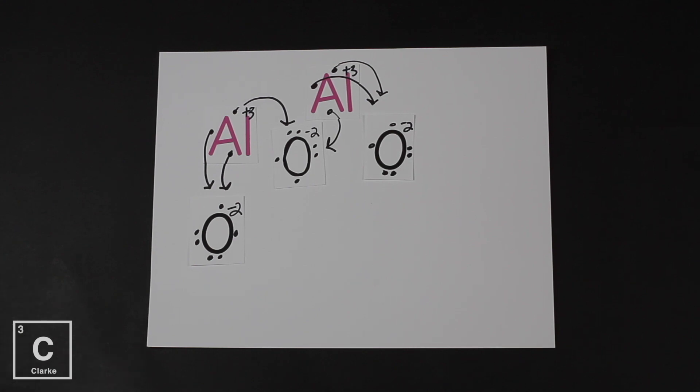So while we were trying to balance all the charges to make everything equal zero, it took two aluminums to match up with three oxygens. So if we put all of this together, when aluminum and oxygen come together to make a compound, it's going to take two aluminums for every three oxygens. So Al2O3.